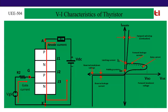This is generally not considered. The voltage at which junction J2 breakdown or avalanche breakdown of junction J2 occurs is known as forward breakover voltage, marked as VBO.